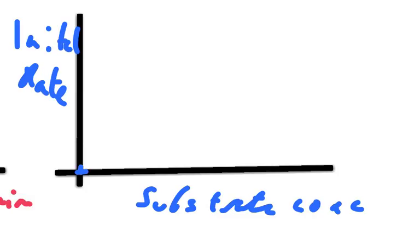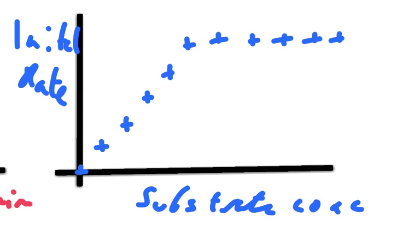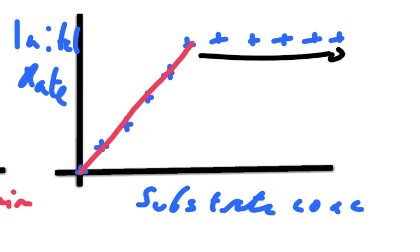If you have no substrate, you'll have no rate of reaction. With a little substrate, the initial rate of reaction will be higher; with more substrate it will be higher still. This pattern continues until all of the active sites are occupied at the beginning of the experiment, at which point the graph levels off. Over the rising portion, substrate concentration is limiting the initial rate of reaction.